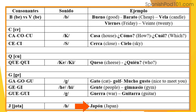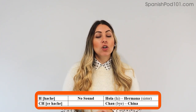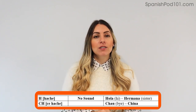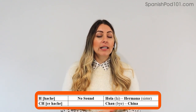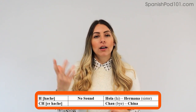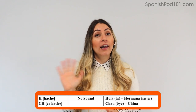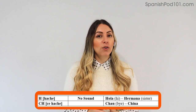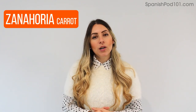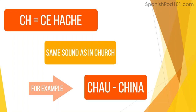Por ejemplo: Japón. The next one is H. In Spanish, the H is basically written in some words but never pronounced — it is silent. Be careful, because if you're an English speaker you tend to pronounce it. In Spanish, pretend it's not there. We don't say 'hola' with the H — we say 'ola.' And 'hermano' becomes 'ermano.'